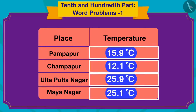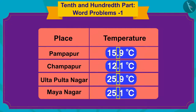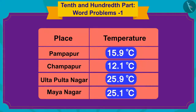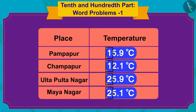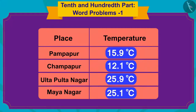Children, whenever we want to compare numbers written in decimal, we will compare the numbers written to the left of the decimal point first. And then compare the numbers written on the right, or the 10th place. Like here, first we will compare the numbers written in the 10th place of all these temperatures.